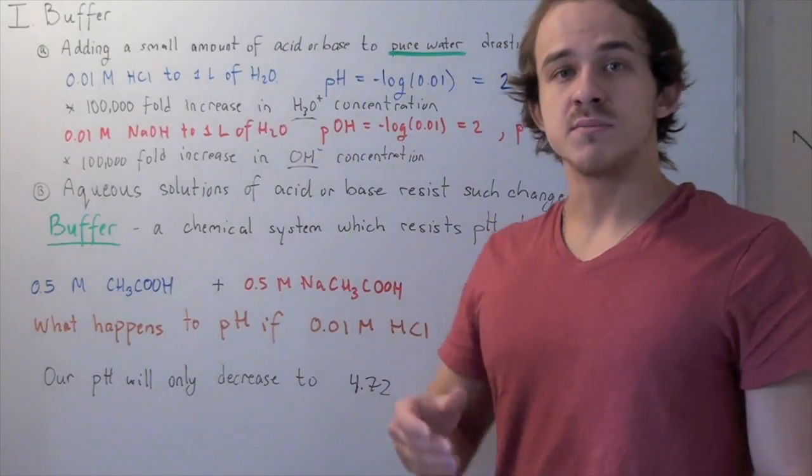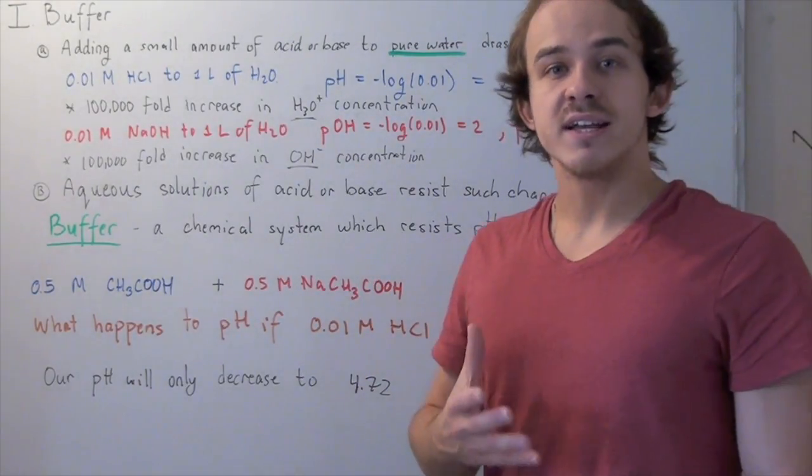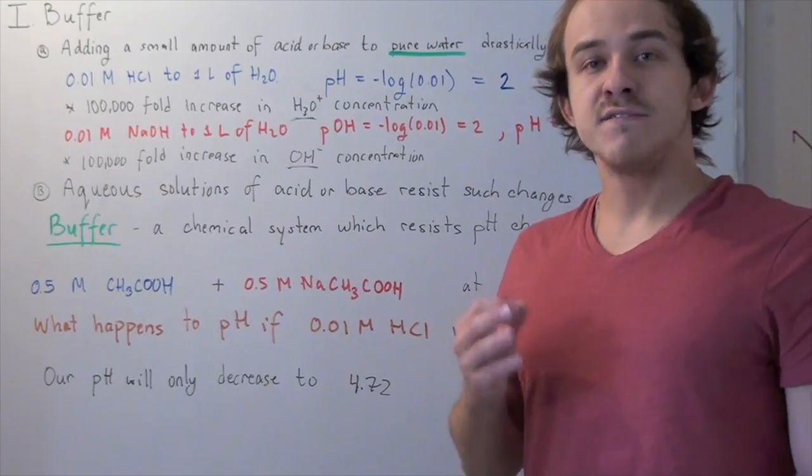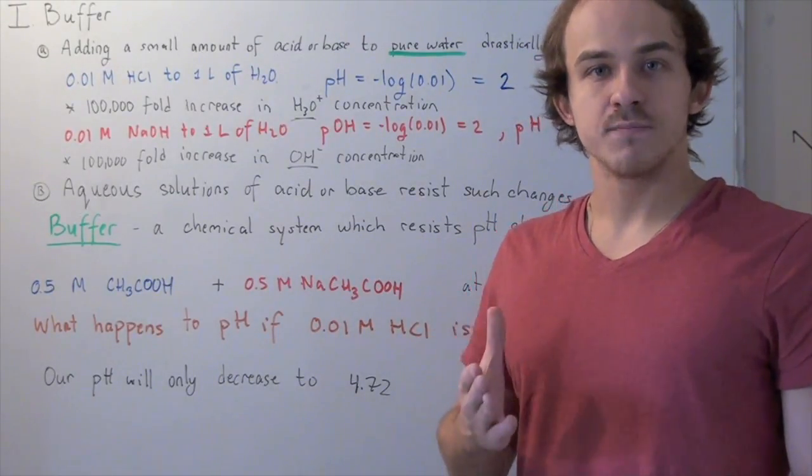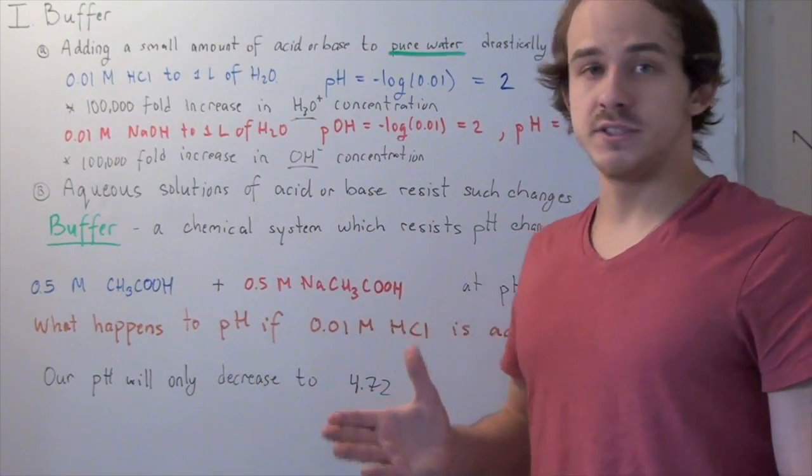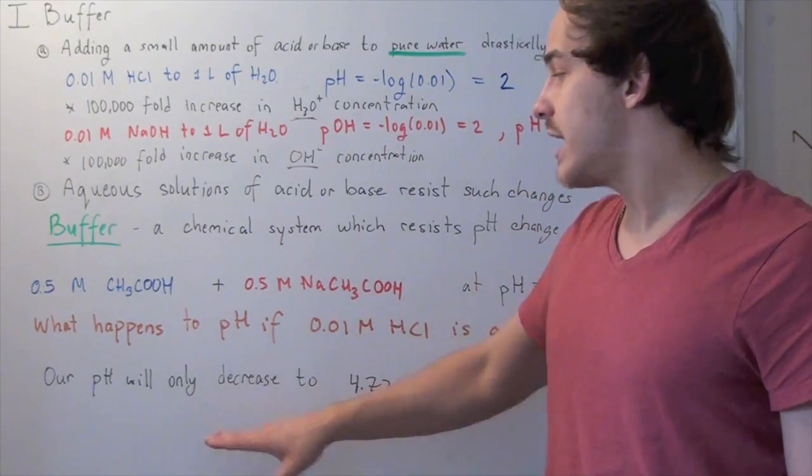For example, our blood is a buffer system. If the pH of our blood decreases even slightly, we will suffocate and die. So these are very important. Now, let's see why this happens.